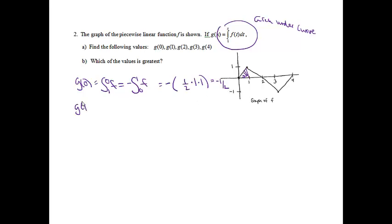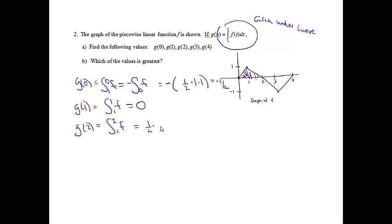g of 1 will be the integral from 1 to 1, and since we're not covering any space, the answer will just be 0. Then g of 2 means the area under the curve from 1 to 2 of the f graph. From 1 to 2 is another triangle, so it's going to be 1/2. The base of that triangle is 1, the height is 1, so the answer is 1/2.